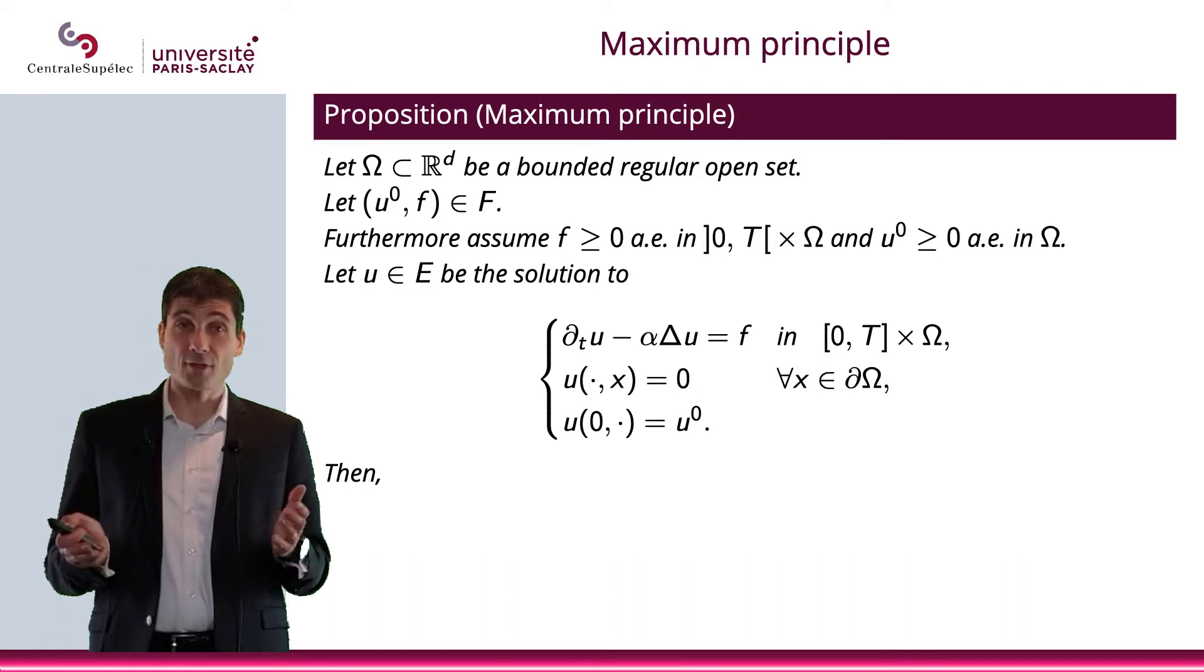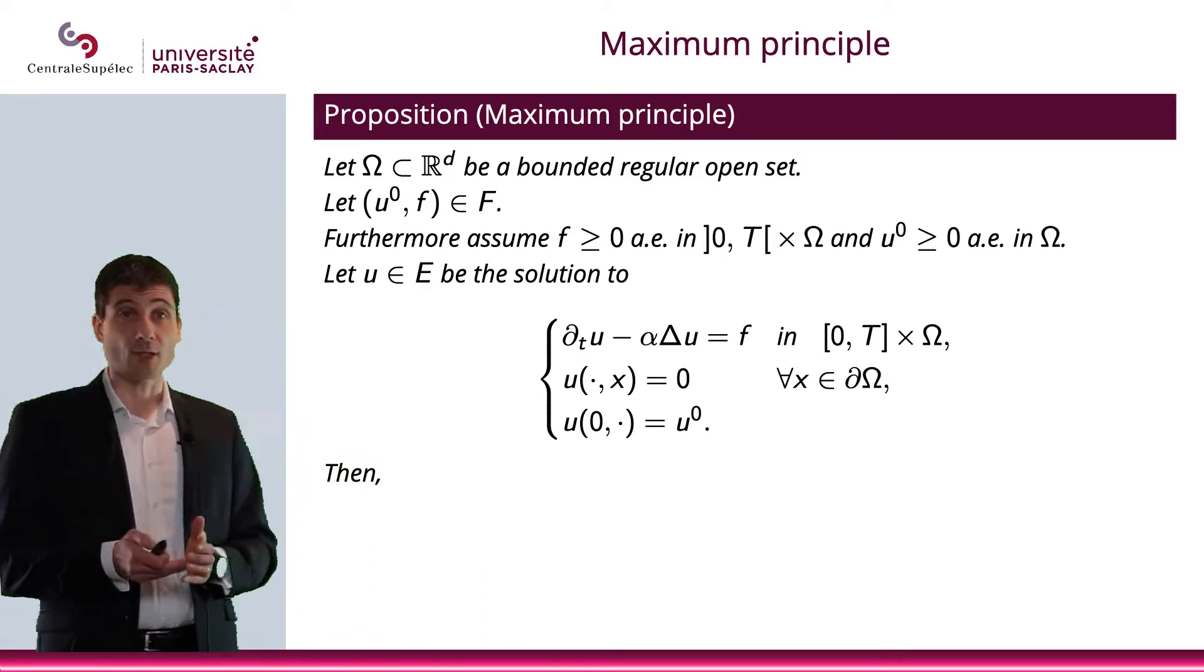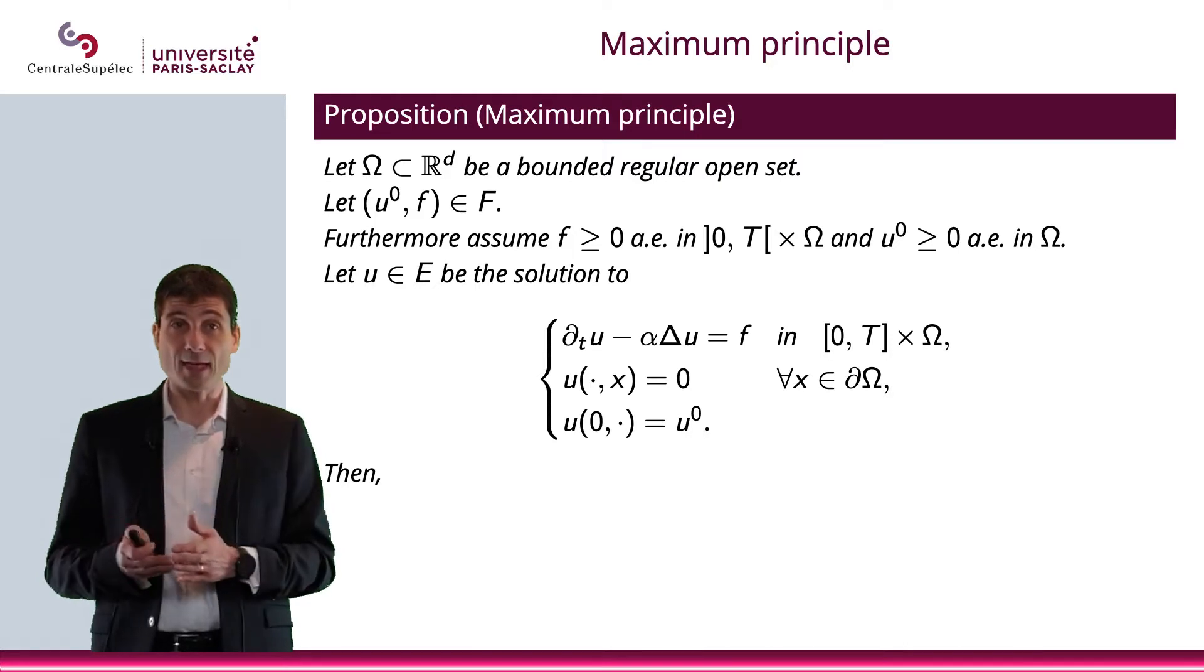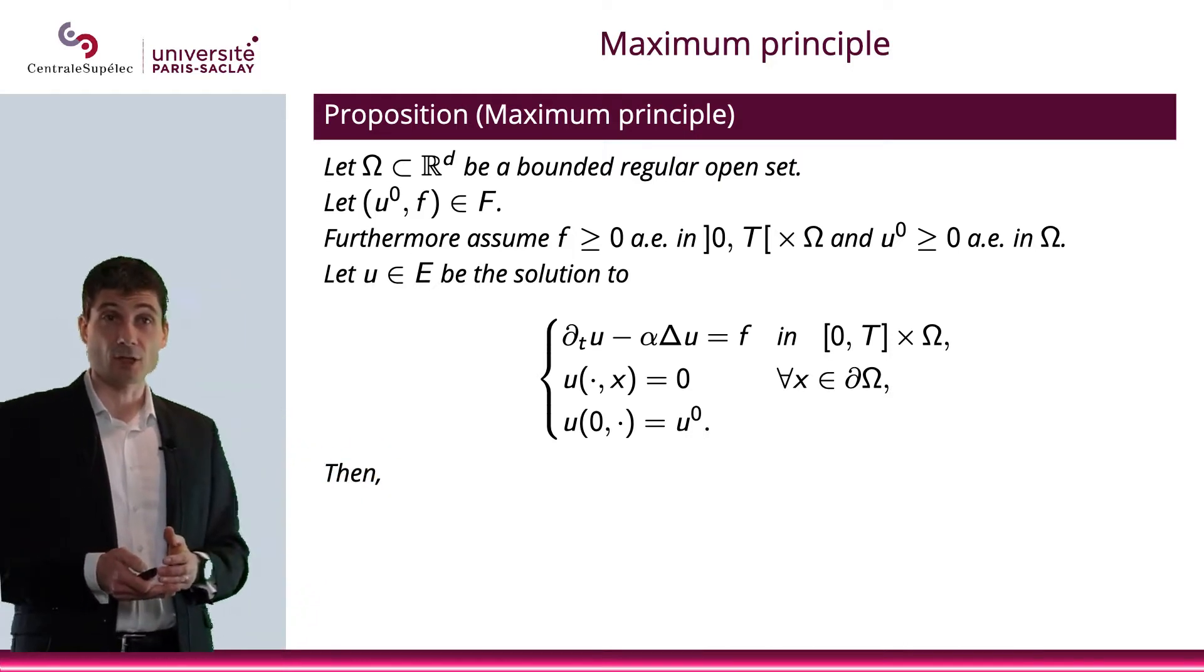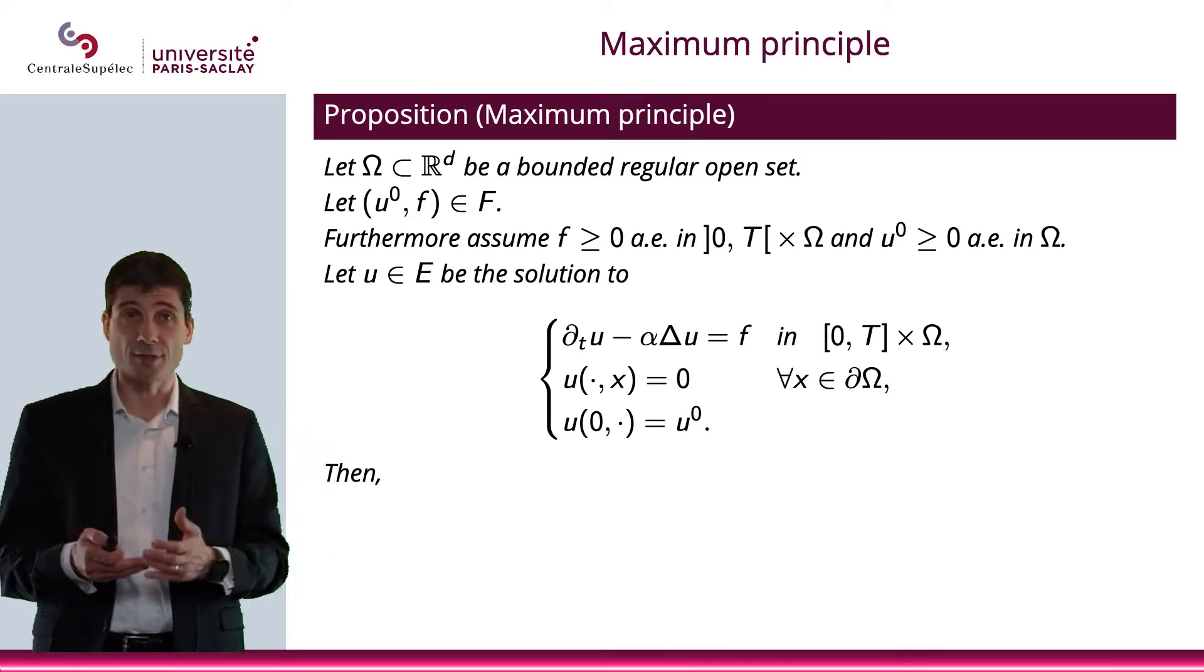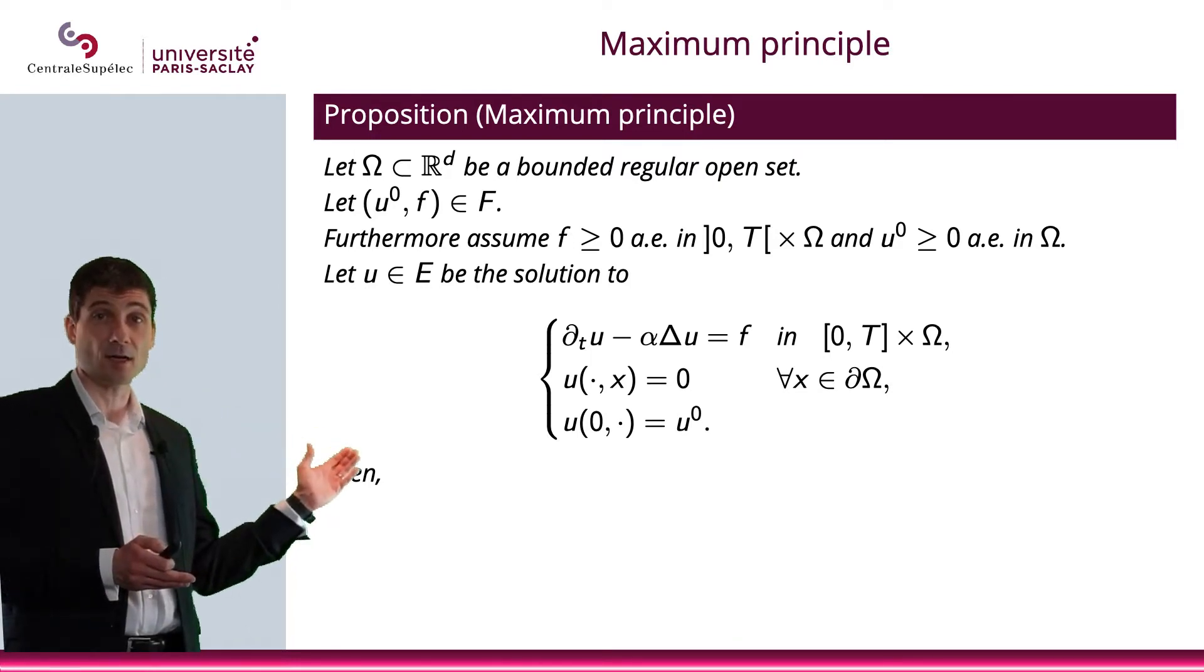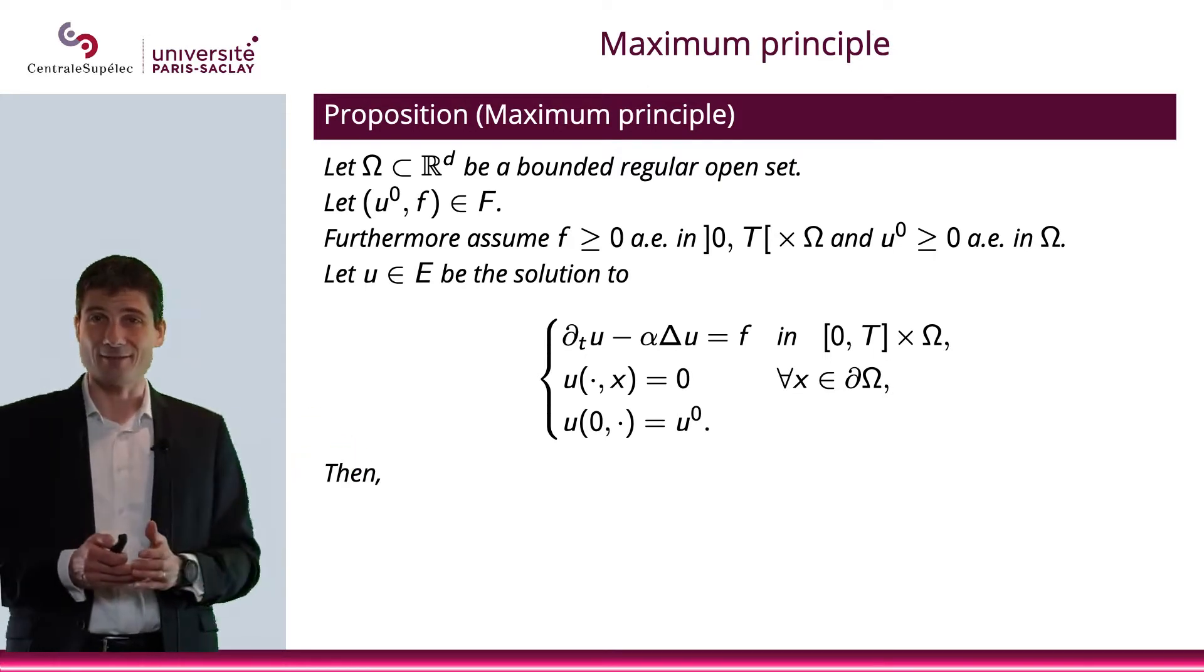Let me first state the principle. So let Ω be included in R^d, which is going to be the space domain—a bounded regular open set. U^0 is the initial condition. F is the right-hand side to my PDE that models the heat source. And we will assume two things: first, that F is non-negative, and second, that U^0 is non-negative.